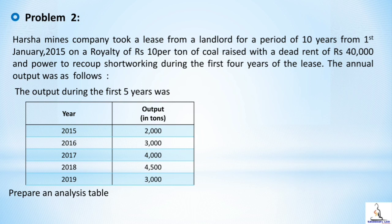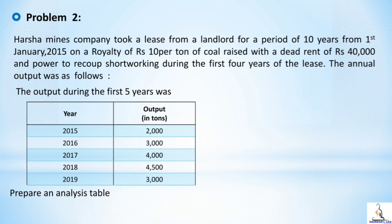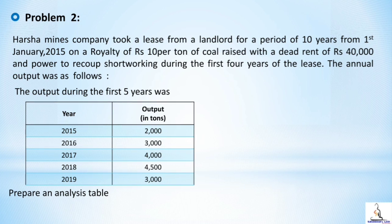The annual output during the first five years was: 2015 — 2000 tons, 2016 — 3000 tons, 2017 — 4000 tons, 2018 — 4500 tons, 2019 — 3000 tons. We are asked to prepare an analysis table. You could pause the video to go through the problem before looking at the solution.